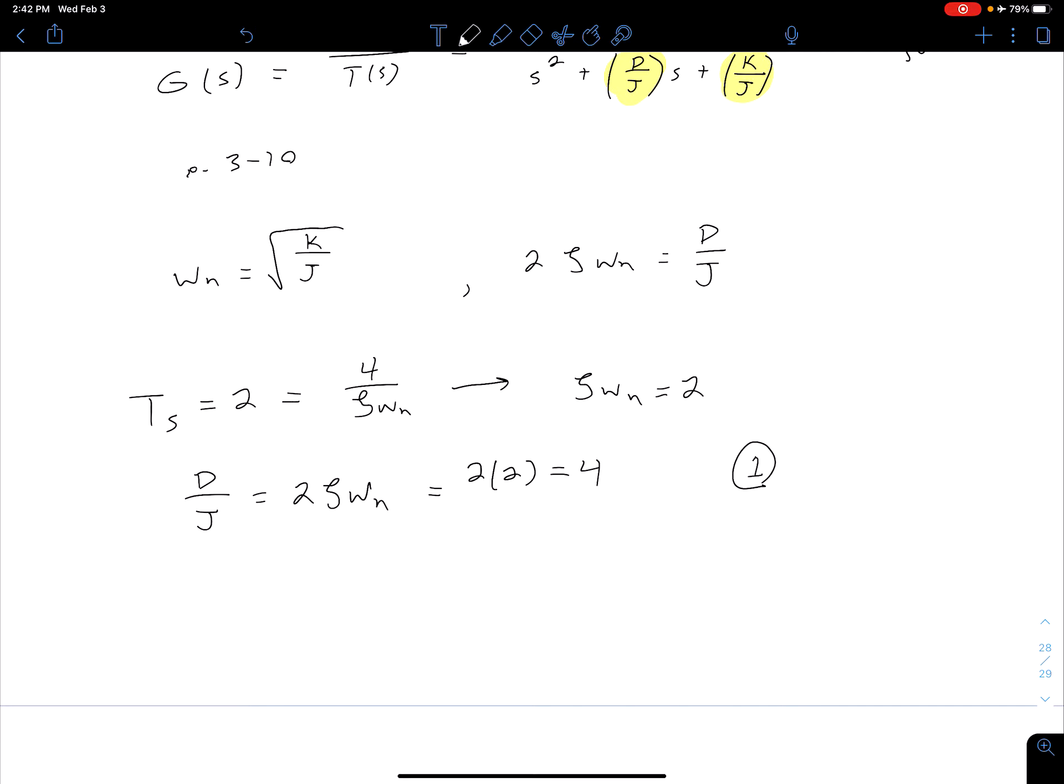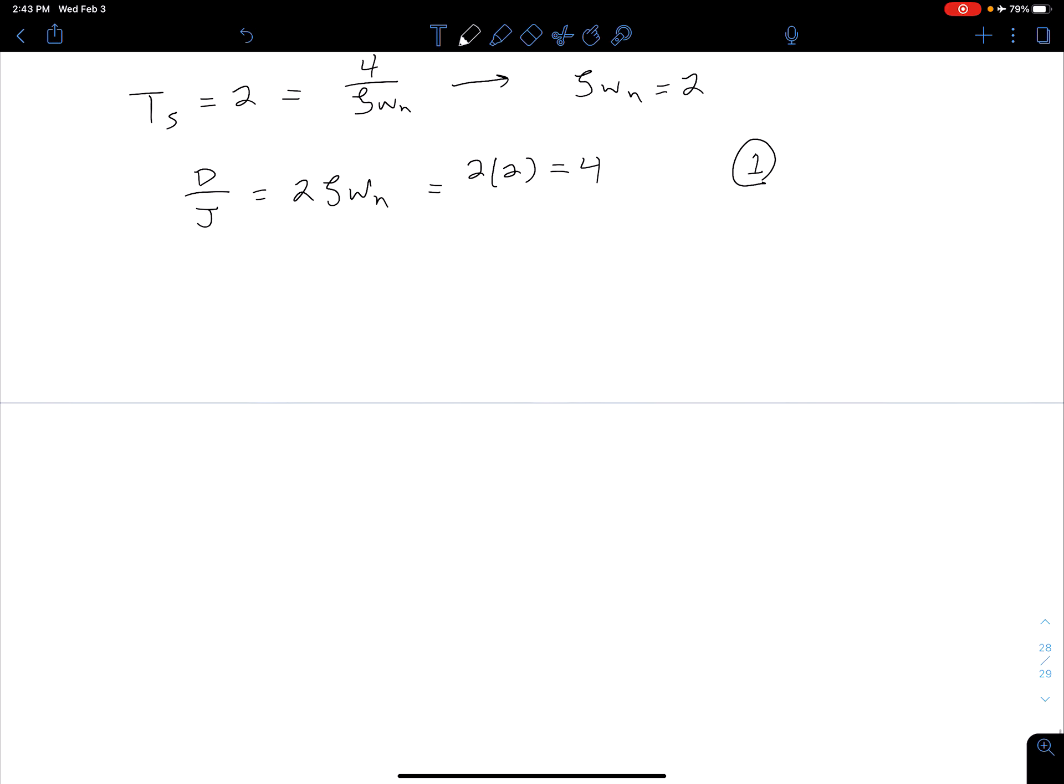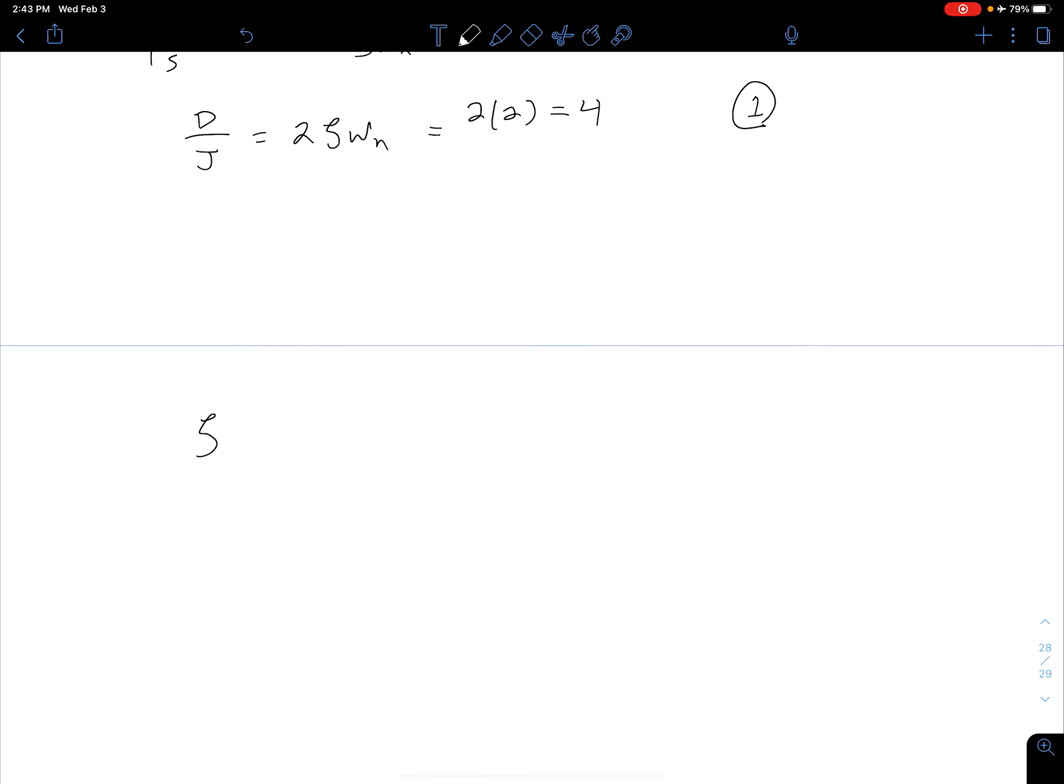Now let's look at our other specification which is our percent overshoot. Remember with percent overshoot the only thing that depends on is the damping ratio zeta. So we can find our damping ratio from our desired percent overshoot using an equation that we had been given previously.